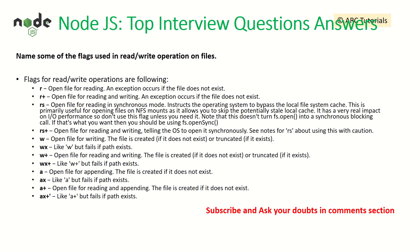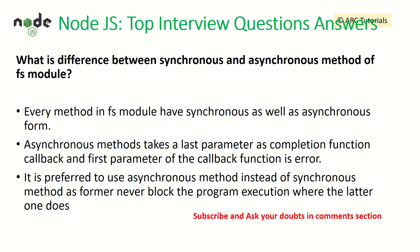Name some of the flags used in read and write operations on files. On a server you will typically write logs and need to work heavily with the file system. You have multiple options: R is for reading, R+ is for reading and writing, and so on. There are many options similar to your Linux file system flags.